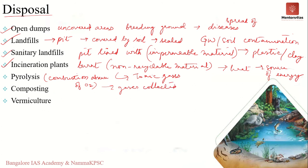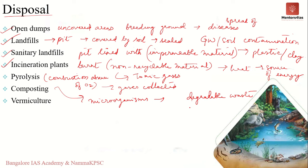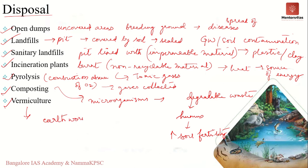Composting is a biological process where microorganisms decompose degradable waste and produce humus, which can be added to soil to increase its ability to hold water. A better method is vermiculture, also known as earthworm farming, where earthworms are added to the compost to break down organic waste further; their excreta makes the compost rich in nutrients and can be used as a fertilizer to increase soil fertility.